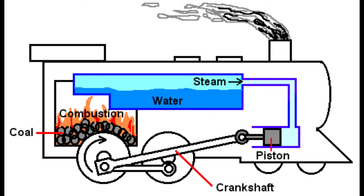A coal-fired power plant works in much the same way, where coal is taken into the plant from the mine and burned in a boiler. Pipes send water into the boiler, and the burning coal boils the water, creating steam which turns a turbine and creates electricity.